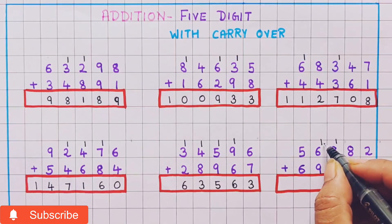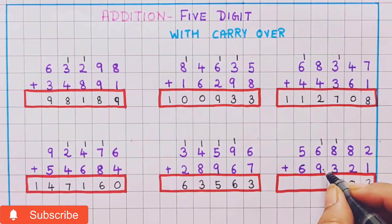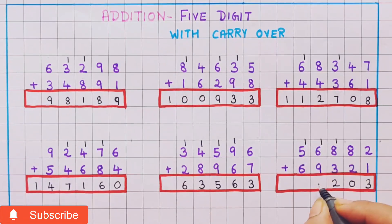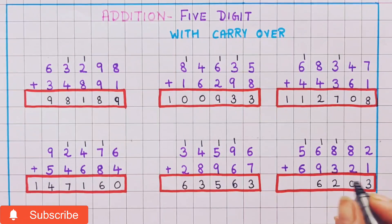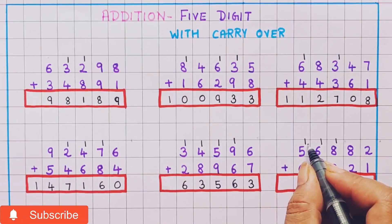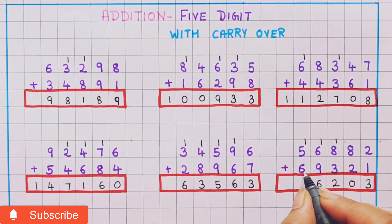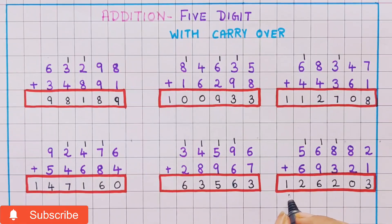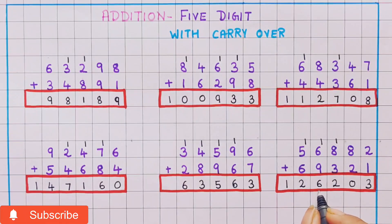Now 6 plus 1 is 7, and 7 plus 9 is 16, so I will write 1 and 6. Now 5 plus 1 is 6, and 6 plus 6 is 12, so I will write 1 and 2. So the answer is 1,26,203.